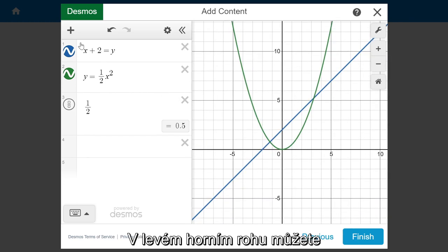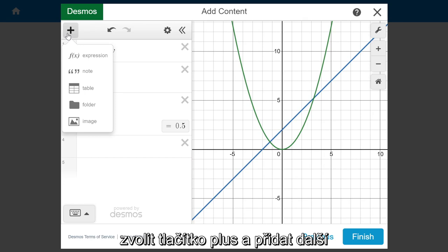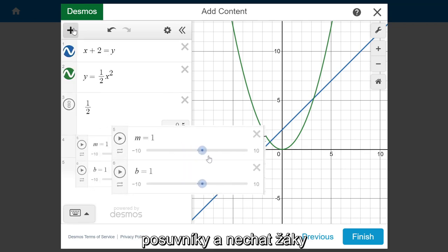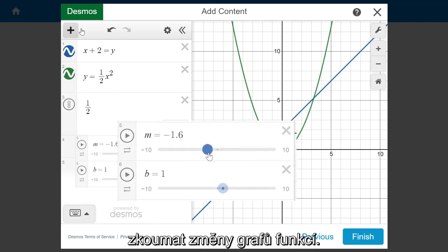On the top left hand corner, you can select the plus button to add additional relationships, tables, and even images. You can create relationships with variables and add sliders for students to explore functions.